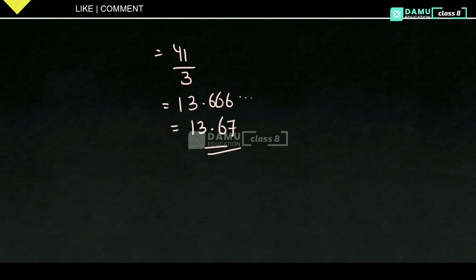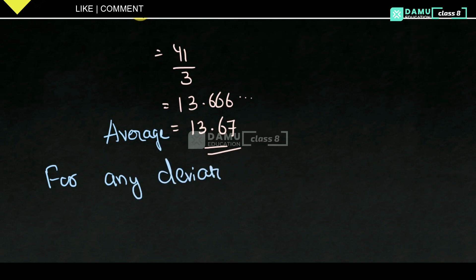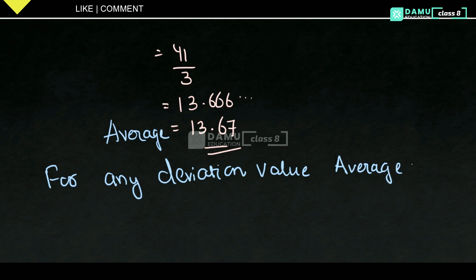So the average is 13.67. For any deviation value, the average is the same. This confirms that the arithmetic mean does not change with the choice of assumed mean. Thanks for watching, please subscribe.